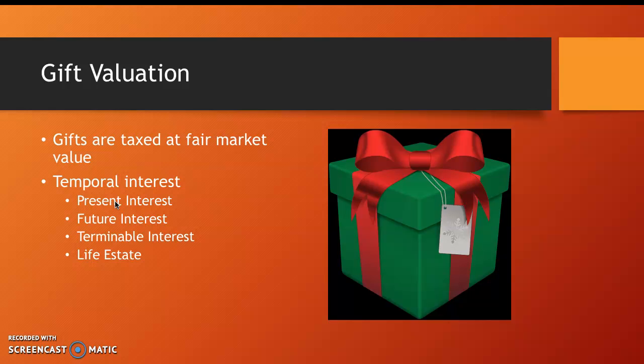Present interest does not refer to a present — it means the recipient would currently or immediately benefit from the gift. Future interest just means that the benefits bestowed on the recipient occur in the future. Terminable interest means that the current benefits of the gift will run out either at a set time, like in five years, or upon a certain event such as death. This is known as a life estate, and the recipient of this benefit is known as the life tenant.